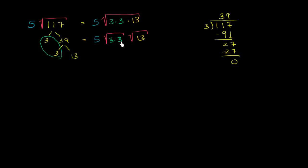Now what's the square root of 9? That's the square root of 3 squared. Well, that's just going to give you 3. So this is just going to simplify to 3.